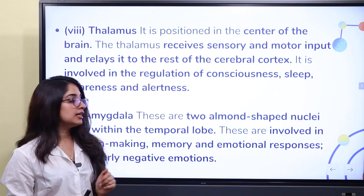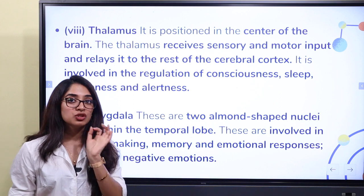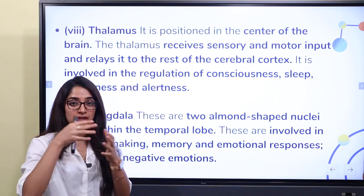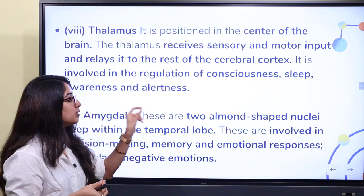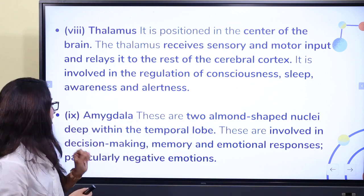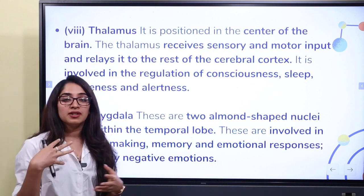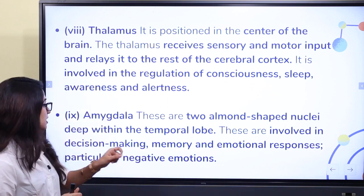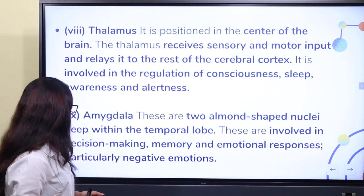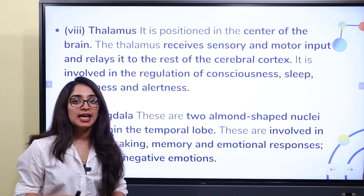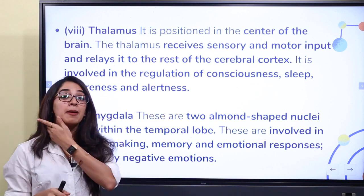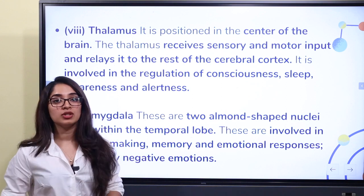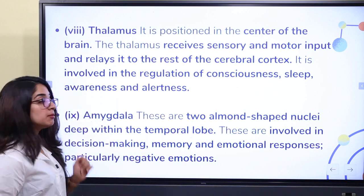The amygdala consists of two almond-shaped nuclei deep within the temporal lobe. These are involved in decision-making, memory, and emotional responses, particularly negative emotions.